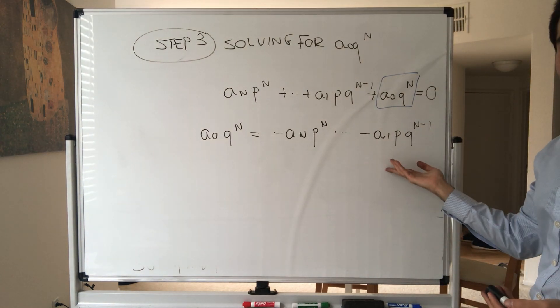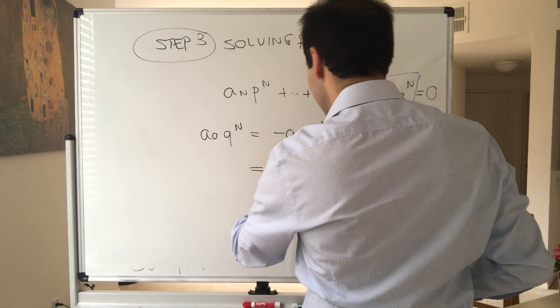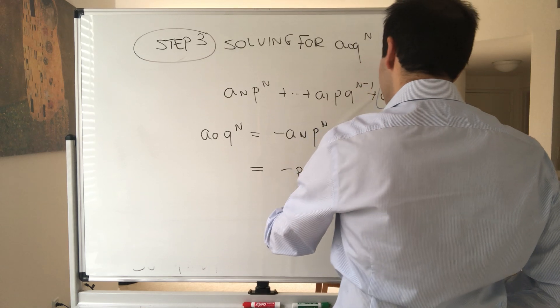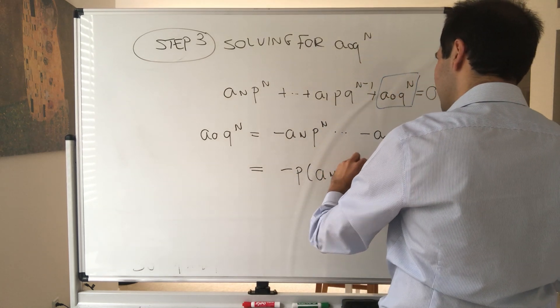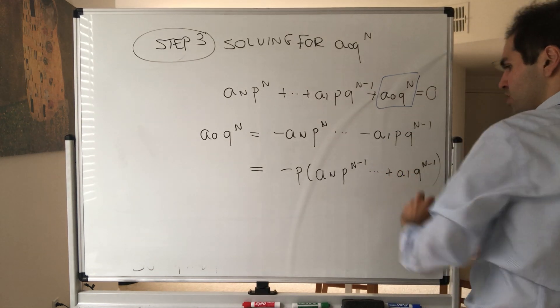But this time there's a factor of p in common, so this becomes minus p times (a_n p^(n-1) dot dot dot plus a_1 q^(n-1)).